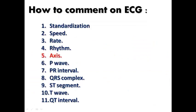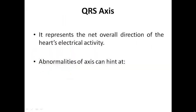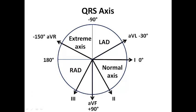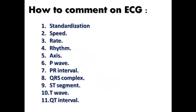The axis of the heart represents the net overall direction of the heart's electrical activity. Abnormality of the axis can lead to a diagnosis of ventricular enlargement, abnormal rhythm, or hemiblock. The ECG axis needs a lot of detail to explain and will be discussed in a separate lecture after this ECG interpretation lecture.